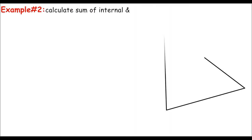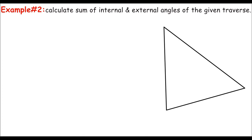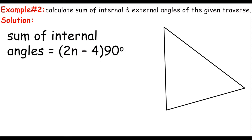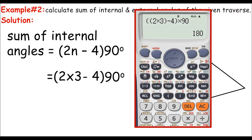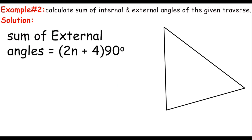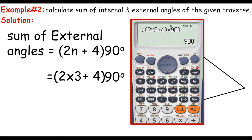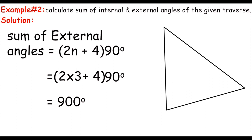For better understanding, let's have Example 2. We are asked to calculate the sum of internal and external angles of the given traverse, which is a triangle. Coming directly to the solution: sum of internal angles = (2n − 4) × 90°, with n = 3 since a triangle has 3 sides. So (2 × 3 − 4) × 90° = 180°. For external angles: (2n + 4) × 90° = (2 × 3 + 4) × 90° = 900°. So the sum of external angles of a triangle is 900 degrees.